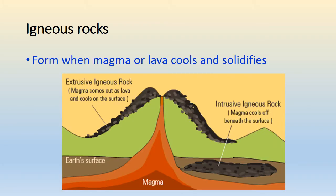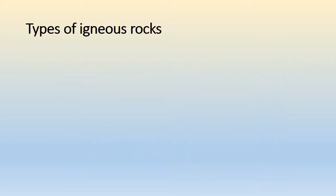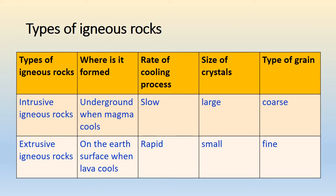Igneous rocks form when magma or lava cools and solidifies. Based on the place where the magma or lava cools, there are two types of igneous rocks: intrusive igneous rocks and extrusive igneous rocks.